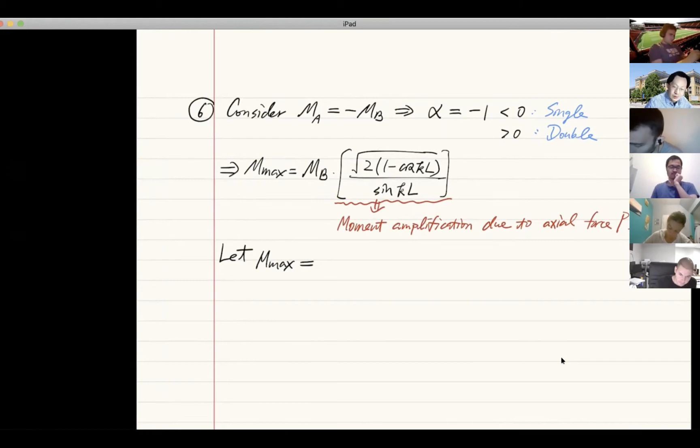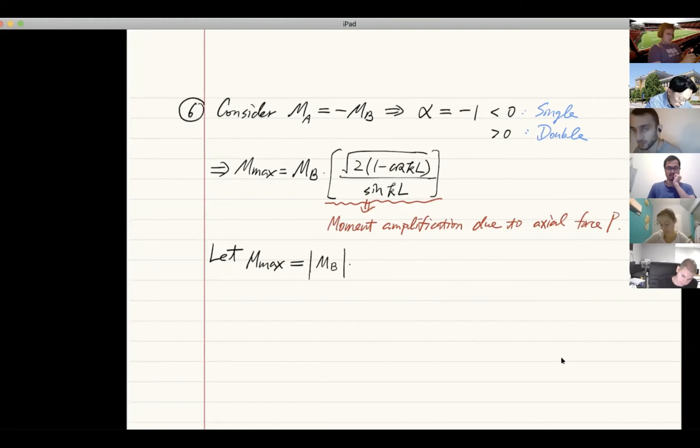We can write this maximum moment as some function of MB. For MB, we're going to take the absolute sign—now we'll cover both single and double curvature cases. We're going to say that this Mx is going to be MB times a coefficient. This coefficient is what we're going to use to evaluate the moment amplification effect.